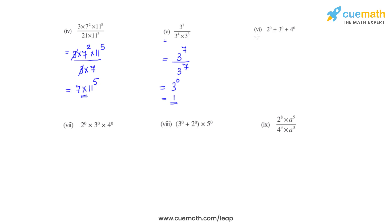In the sixth bit, we have 2 raised to 0, and since anything raised to 0 is 1, we write 1. The same goes for 3 raised to 0 and 4 raised to 0. Adding 1 plus 1 plus 1 gives us the final answer of 3.